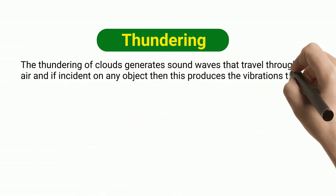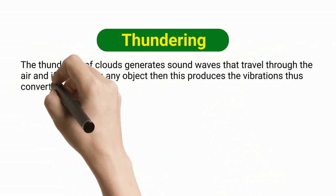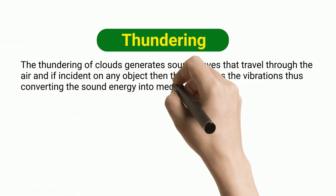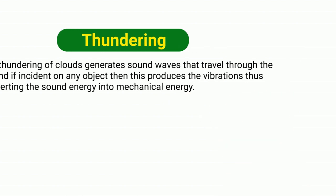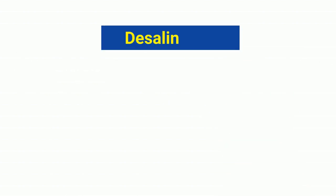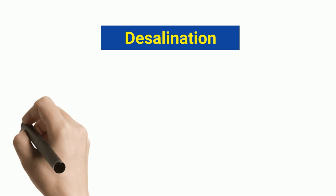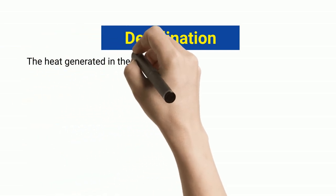Thundering: The thundering of clouds generates sound waves that travel through the air. When incident on any object, these produce vibrations, thus converting sound energy into mechanical energy.